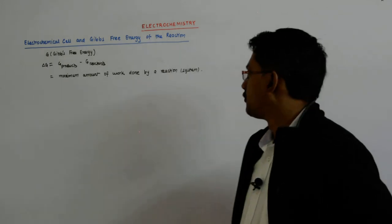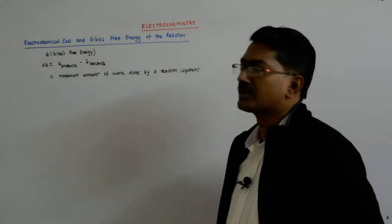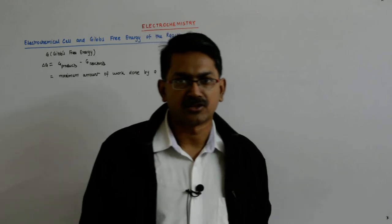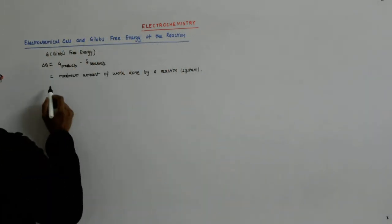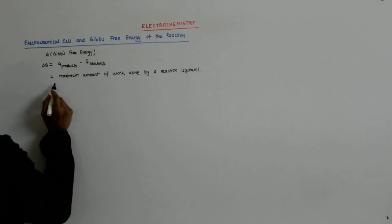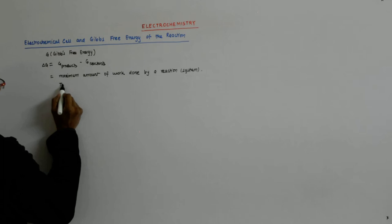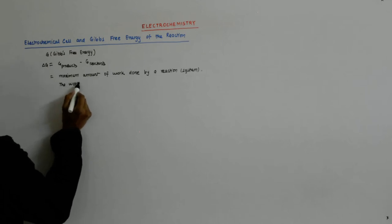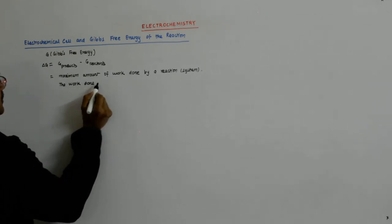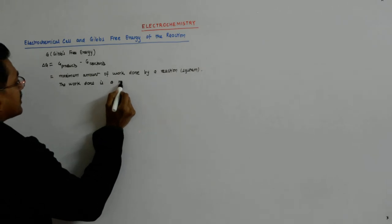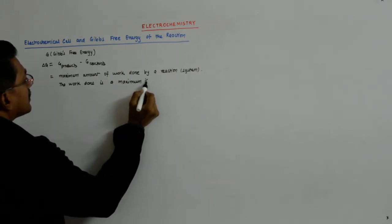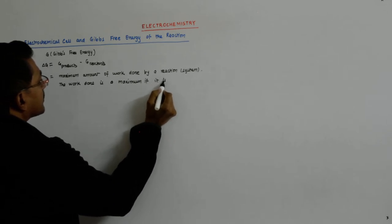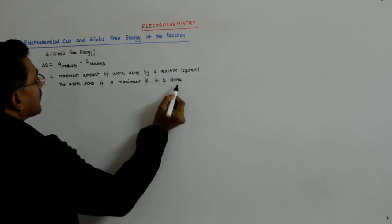This is the maximum amount of work that is done by a reaction. Now, the work done is maximum if it is done reversibly.